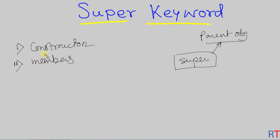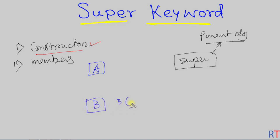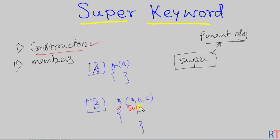Now we're going to talk about how we can invoke the constructor of the parent class using the super keyword. Suppose there is one parent class A and one child class B. While using the constructor of the child class and initializing the child members, it is possible to invoke the constructor of the parent class from inside the child class constructor. We can use the super keyword as the first line of statement of the child class constructor.